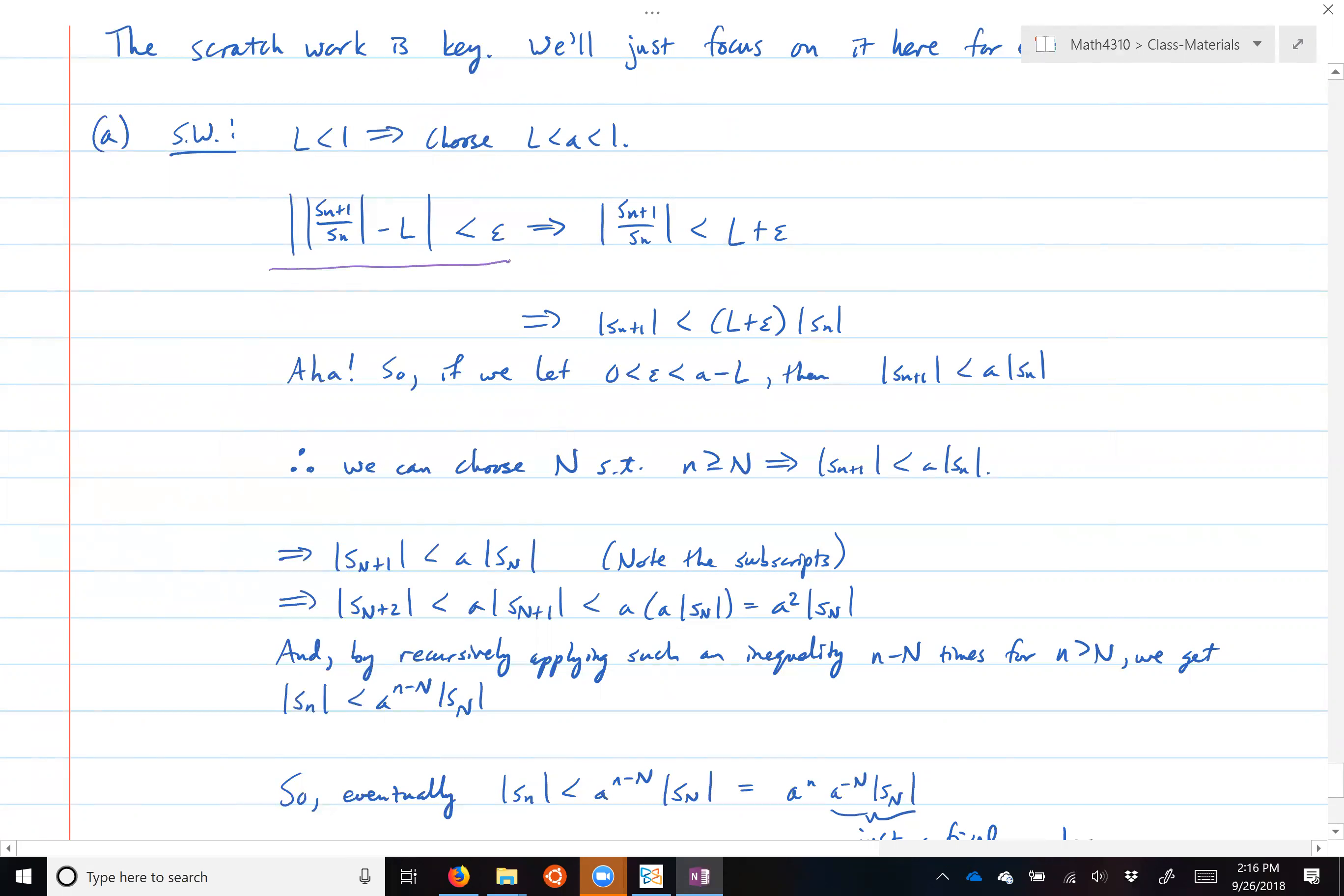And then you say, look, I can eventually, for any epsilon greater than zero that I might pick, I can take |S_n+1/S_n - L| less than epsilon. And if I could do that eventually, then that just means that the terms S_n+1/S_n are less than L plus epsilon. And then just by multiplying the denominator over, that means that the n+1 term is less than (L + epsilon) times the absolute value of S_n.